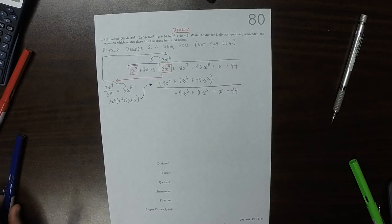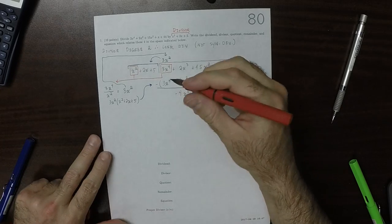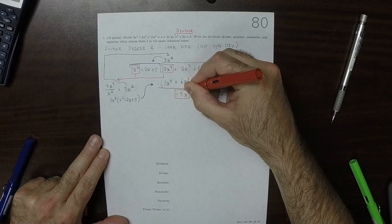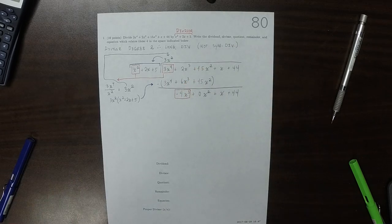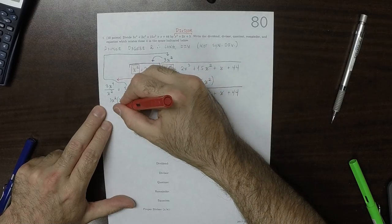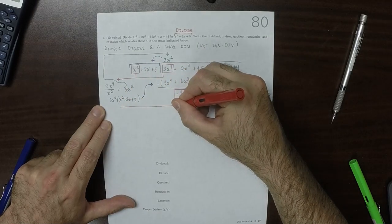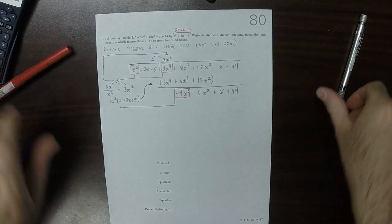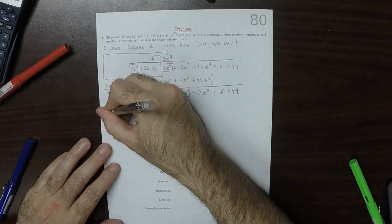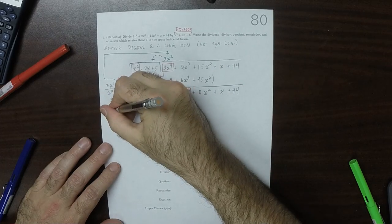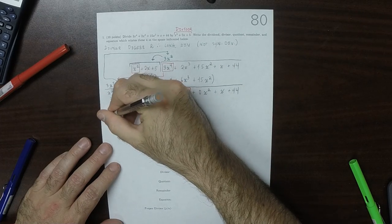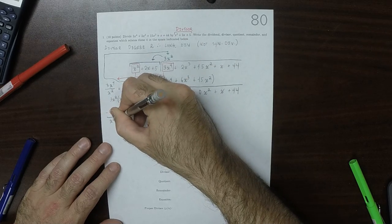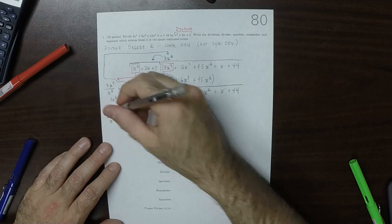One round is complete. Now the leading term inside the house is negative 4x cubed. Divide by x squared, that is negative 4x. This partial quotient gets taken to the top to be recorded.